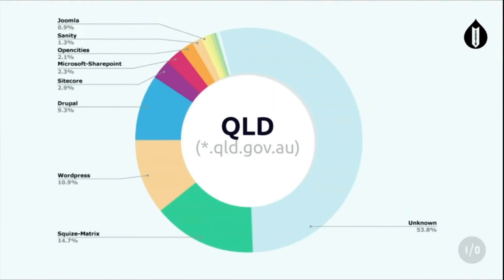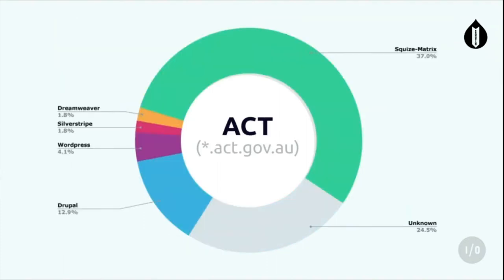Queensland - spicy topic in Brisbane. 53% unknown. Squiz at 14%, WordPress 10%. And Sanity, which is kind of like Contentful - a cloud-based content-as-a-service thing. And I put Active CMS for completeness, but it's pretty much all Squiz. And I don't think that's supposed to be 37% - I'll fix that up in post. But yeah, Dreamweaver - you can spot that there if you've got the keen eye.